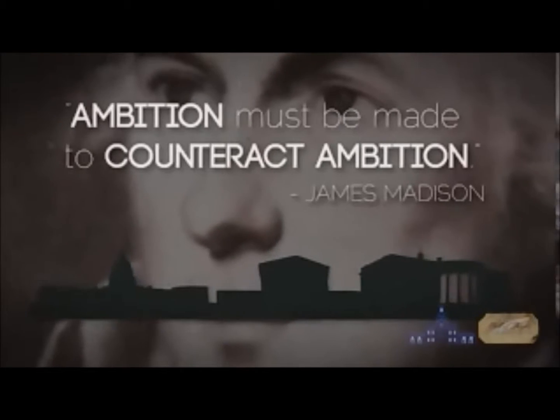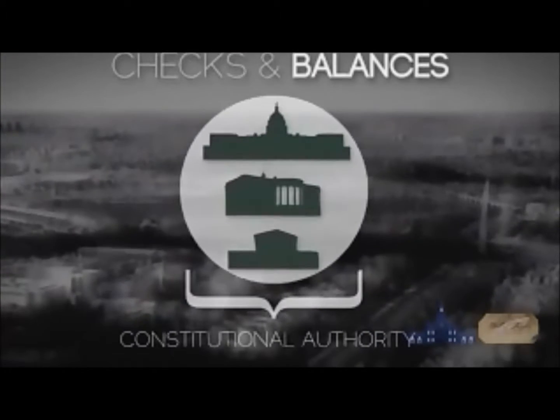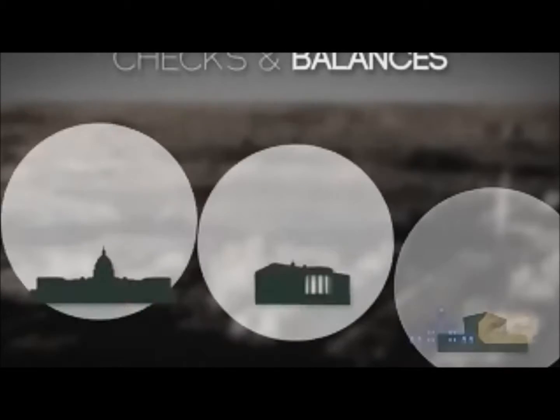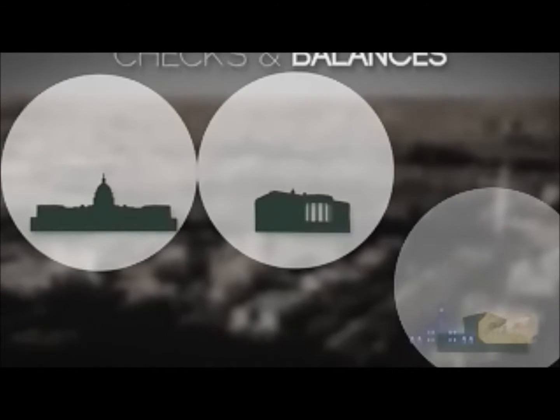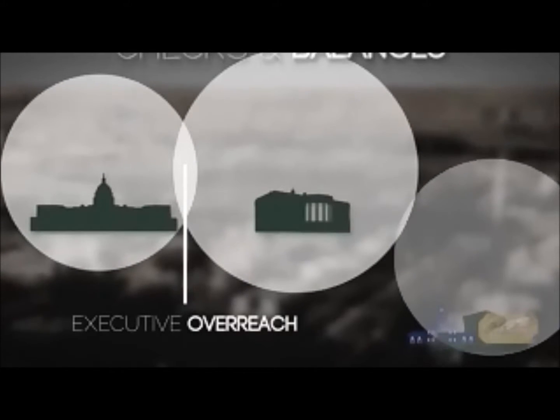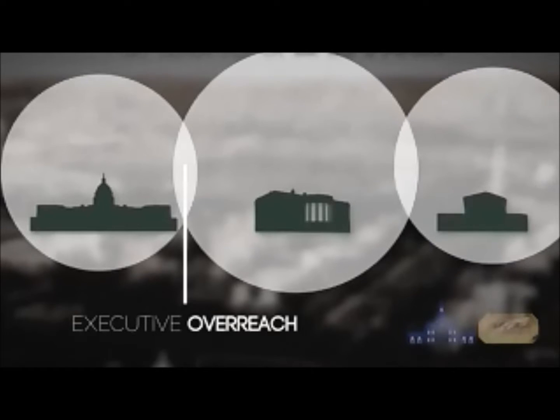Flowing out of the separated powers are checks and balances. If one branch of government begins to take on too much control, the other branches have things they can do to check and stop the growth of that power.